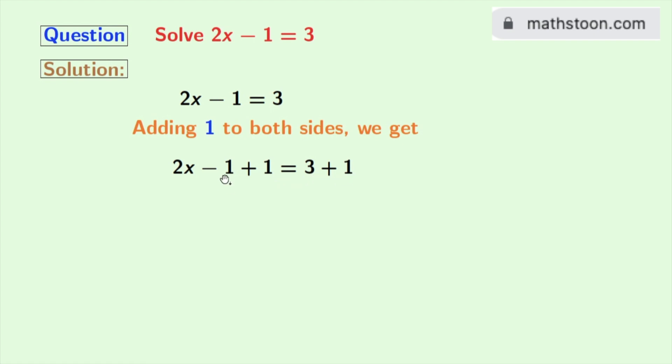See that we have minus 1 plus 1 in the left hand side which is equal to 0. So we are left with 2x in the left hand side.